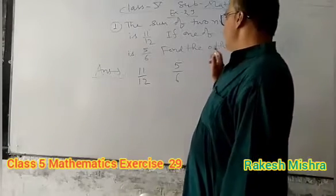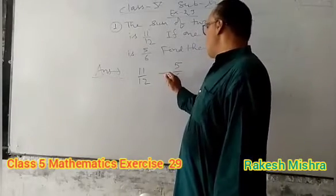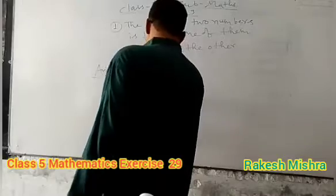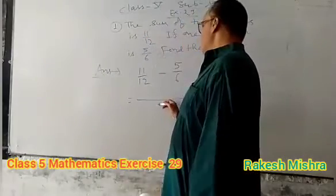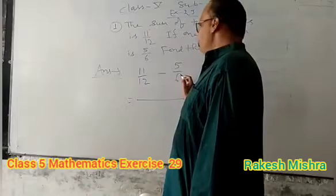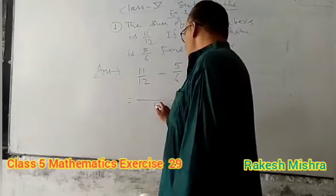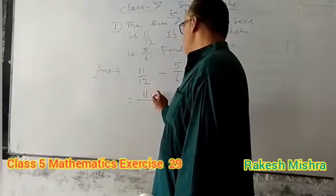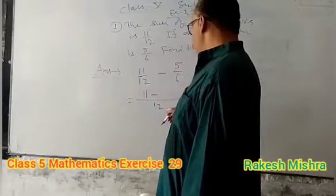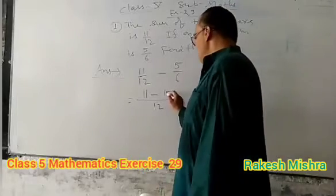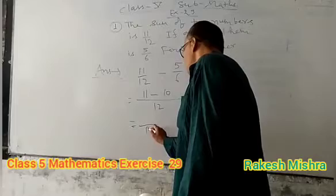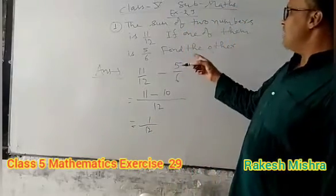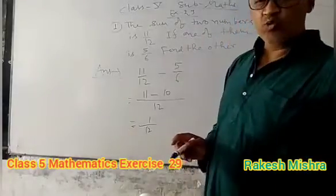What should we do? We should subtract from 11 by 12. And for this we have to write the LCM of 12 and 6, and that will be 12. 12 divided by 12 is 1, so 1 times 11. 6 divided by 12 is 2 times, so 10. And the answer, 1 by 12 is the other number. This is the answer of this question.